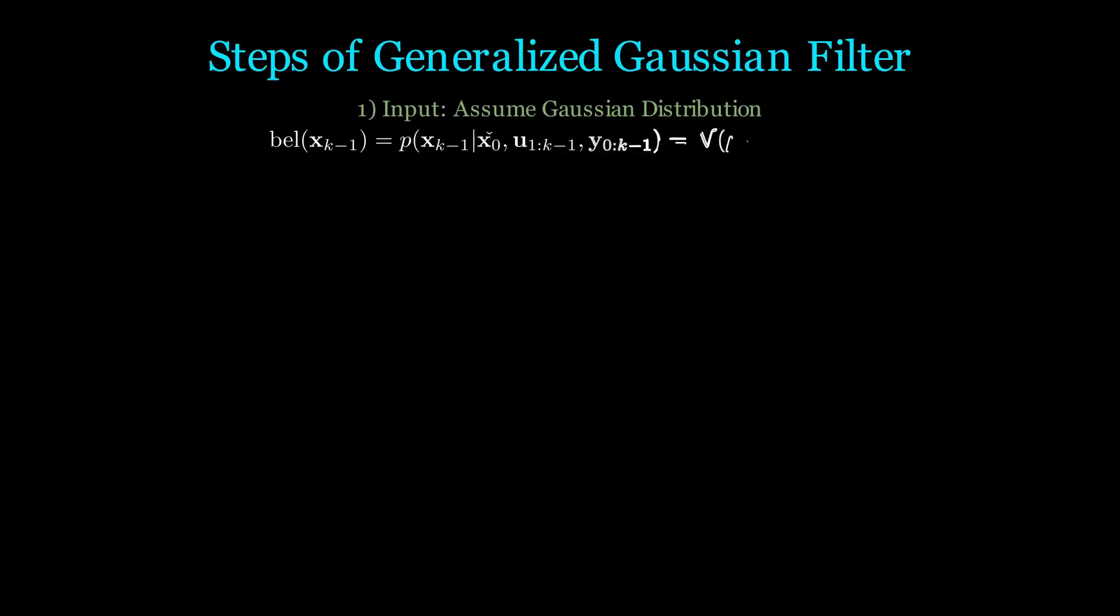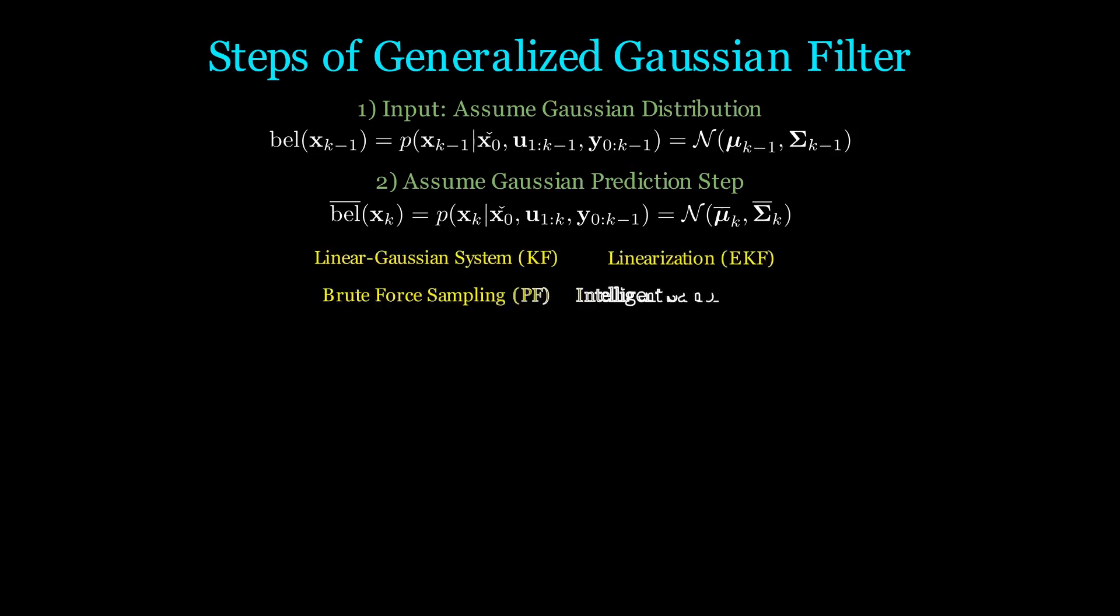Now let's put this into the context of state estimation. In our recursive filters, we start with the belief bel(X_{k-1}), which we assume to be Gaussian. Then, let's assume the result of the prediction step is also Gaussian. We can arrive at this step in a number of ways.